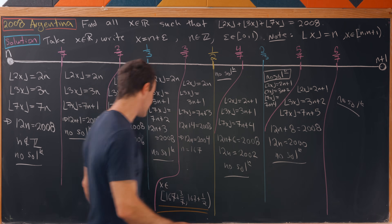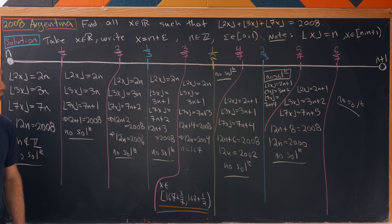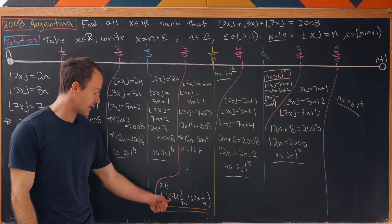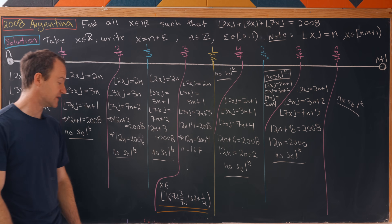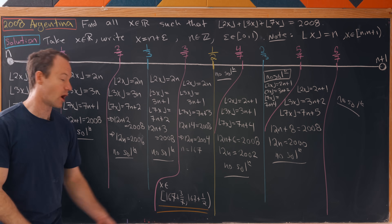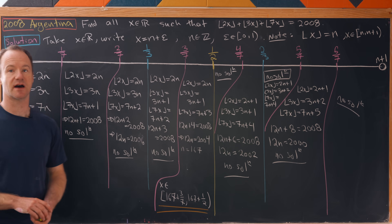After all of that work, we see that we only have a solution in that central region. The complete solution is every x in the interval [167 + 3/7, 167 + 1/2).